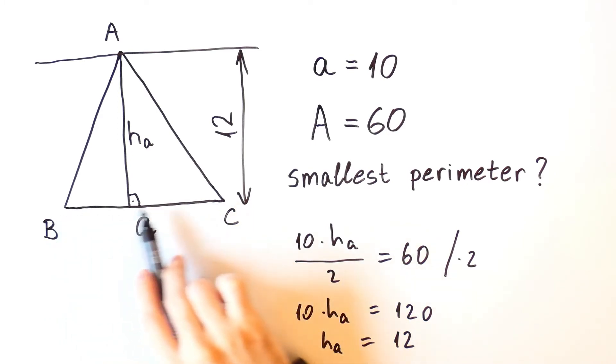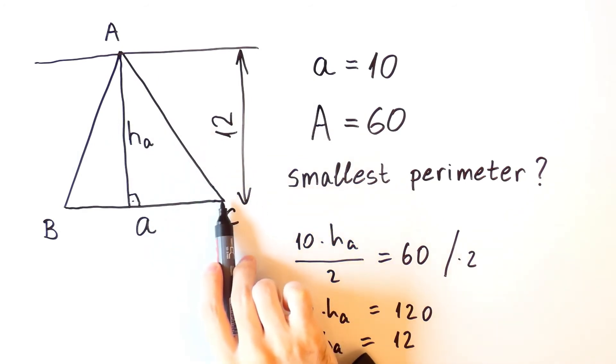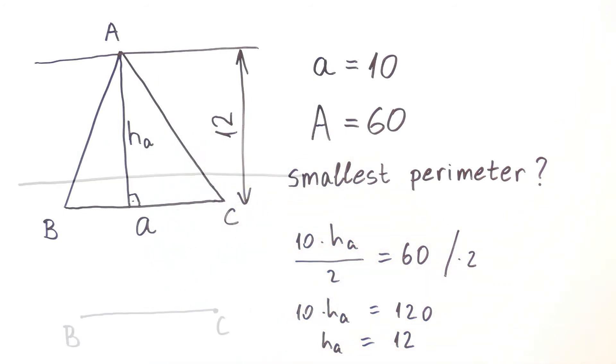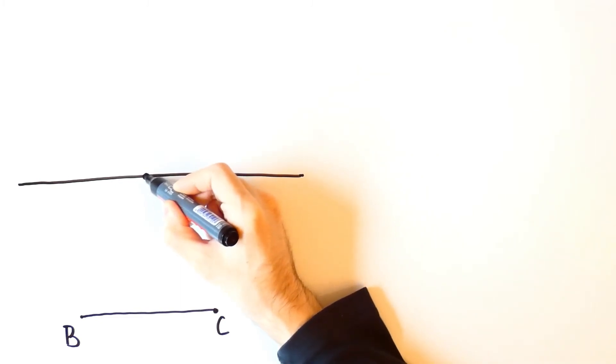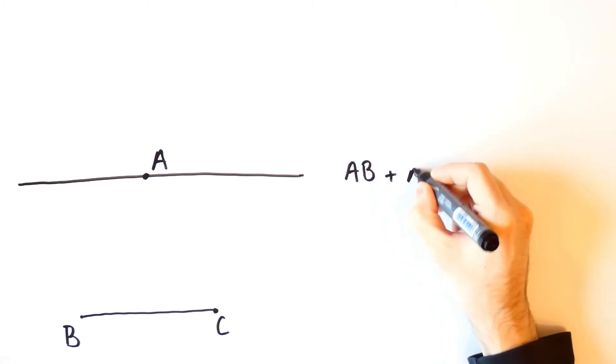And since the length of BC cannot change, then we want AB plus AC to be the smallest possible. So we want to find the point A on this line such that AB plus AC is the smallest possible.